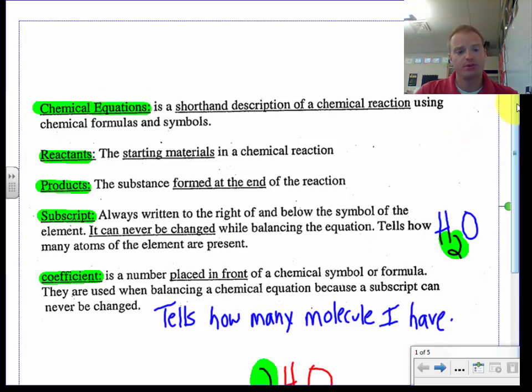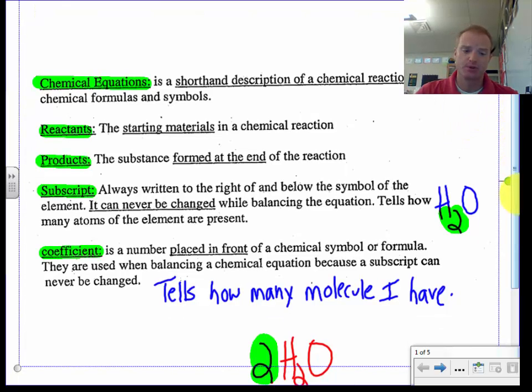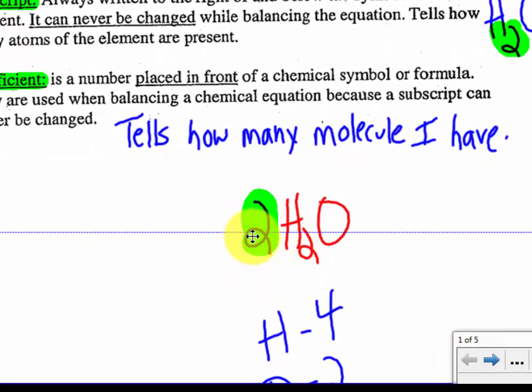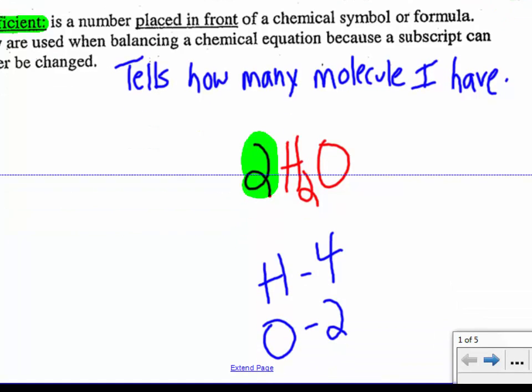Another number that is often used is a coefficient. So a coefficient is a number placed in front of a chemical symbol or formula. They are used when balancing a chemical equation because a subscript can never be changed. So how many molecules of water are involved in a certain chemical reaction? That's what that coefficient tells you. It tells you how many molecules you have. So my coefficient might be something like this. I've got H2O right here. And if there's a two in front of it, it would tell me I had two H2O molecules.